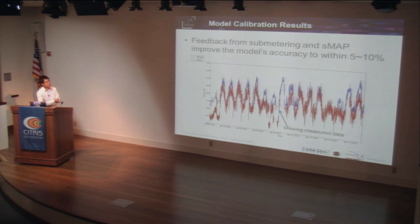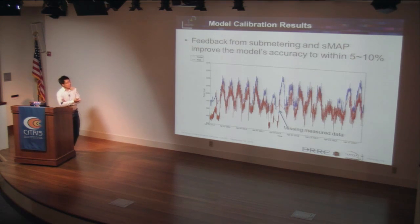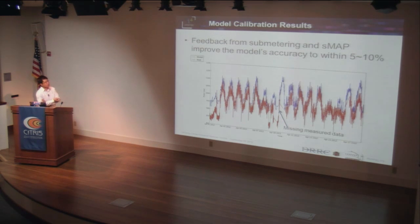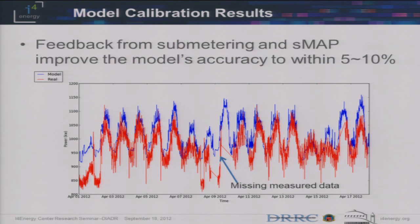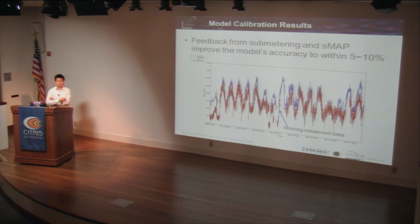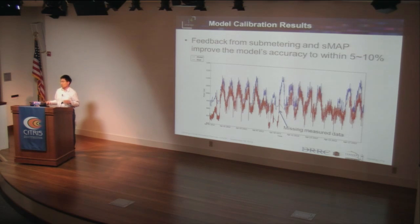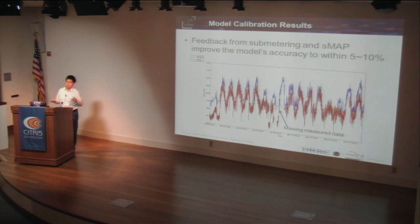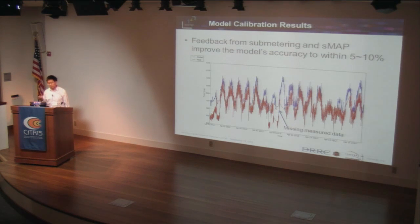Here are the general results comparing the real measured data. The blue line is the model simulation output from EPLUS, and the red line is the real data from Citrix. There is some missing data, but generally we can improve the model accuracy to within 5 to 10%. The purpose of improving model accuracy is for the demand response application — our target is to achieve 30% demand reduction. A model with more than 20% error is a weak model, and the results it provides to the building manager could lead to wrong decisions when implementing optimal control strategies.